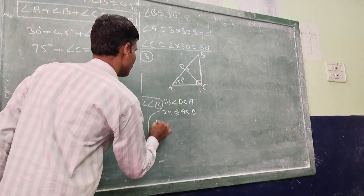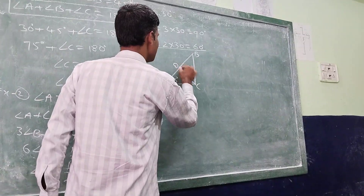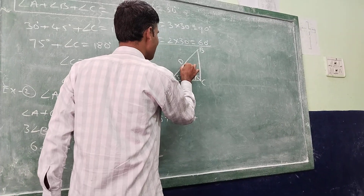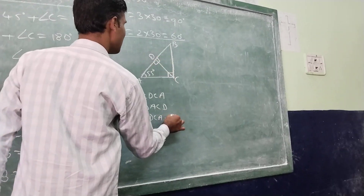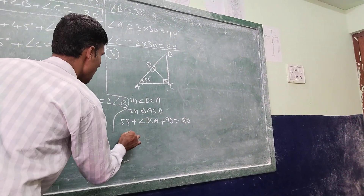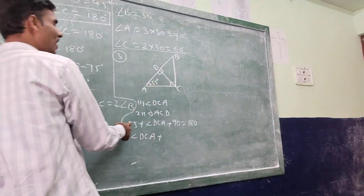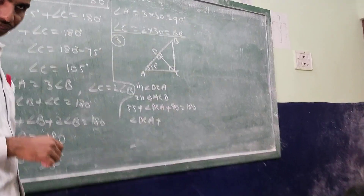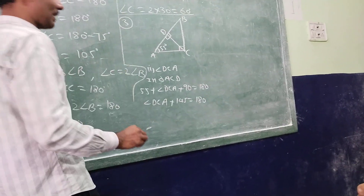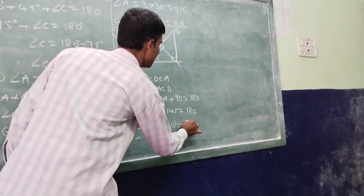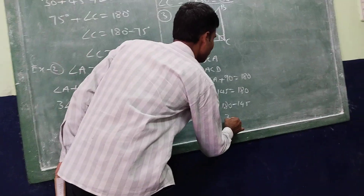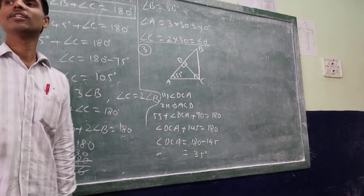One angle equals 55 degrees. DCA we don't know — that's what we're asked to find. The third angle is 90 degrees, because CD is perpendicular to AB. So: angle DCA plus 55 plus 90 equals 180. That gives 90 plus 55 equals 145, and angle DCA equals 180 minus 145, which equals 35 degrees.